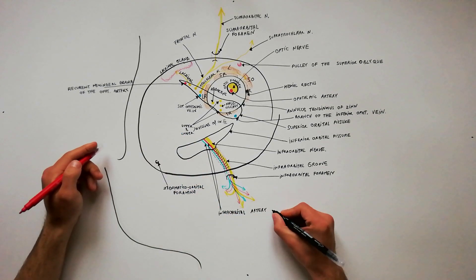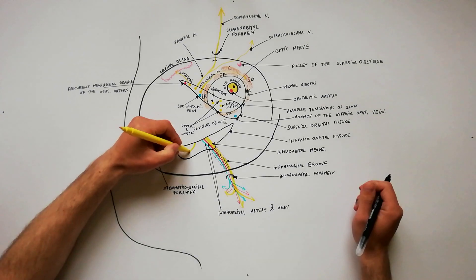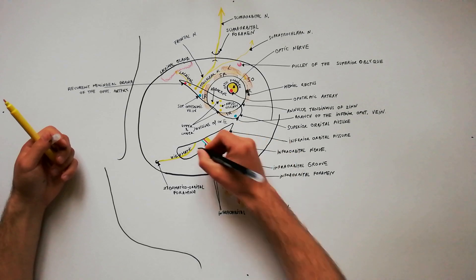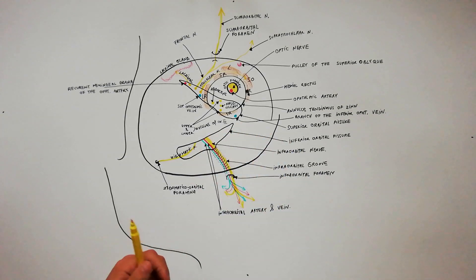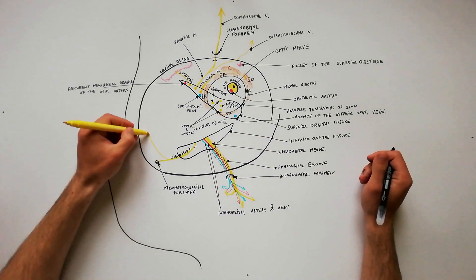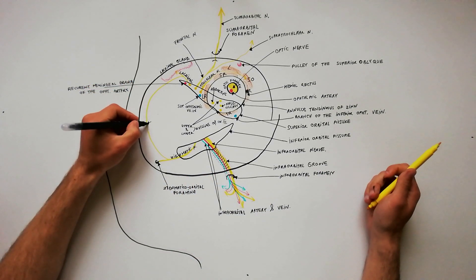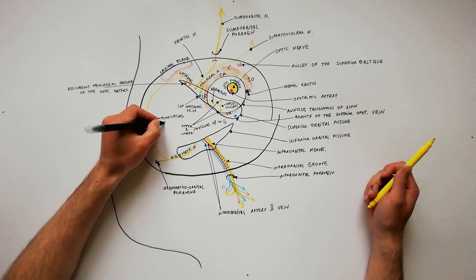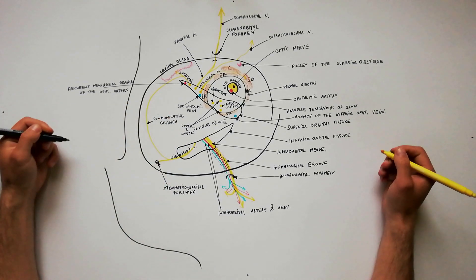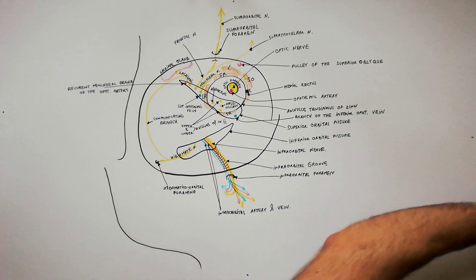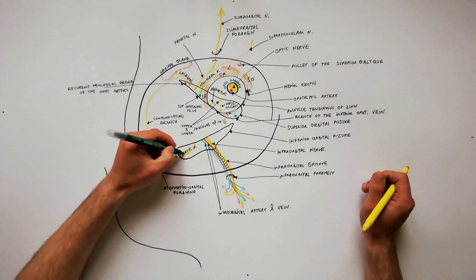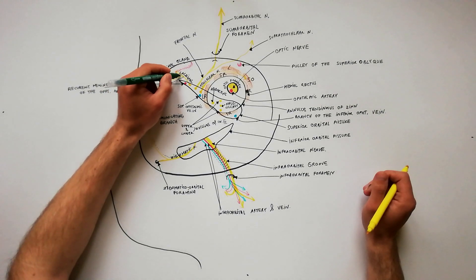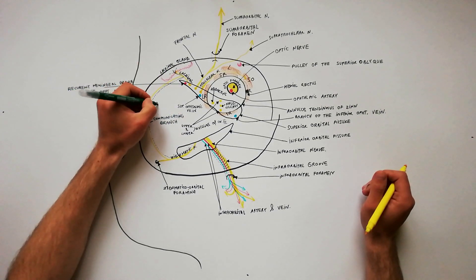The zygomatic nerve is also a branch of the maxillary nerve, which arises in the pterygopalatine fossa. It enters the orbit by the inferior orbital fissure and is directed towards the zygomatic orbital foramina. Before entering the zygomatic orbital foramina, it gives off a communicating branch with the lacrimal nerve. Via this communication, it carries postganglionic parasympathetic fibers to the lacrimal nerve, which in turn will supply the lacrimal gland.